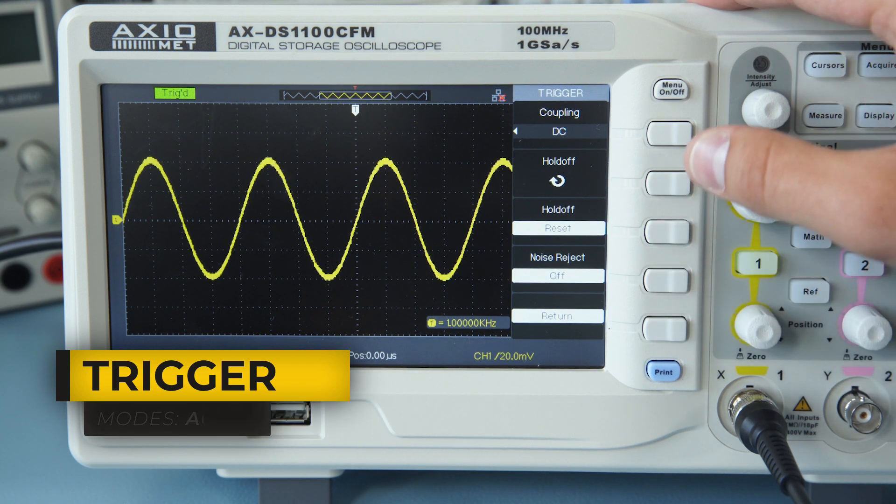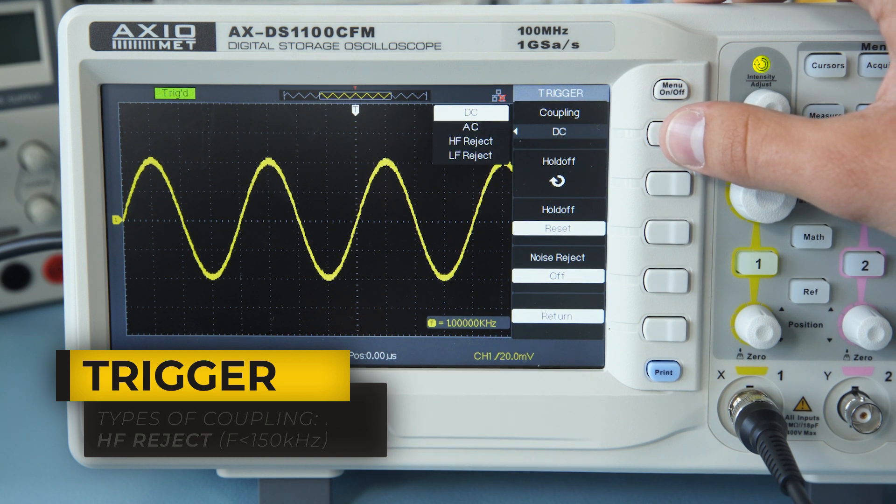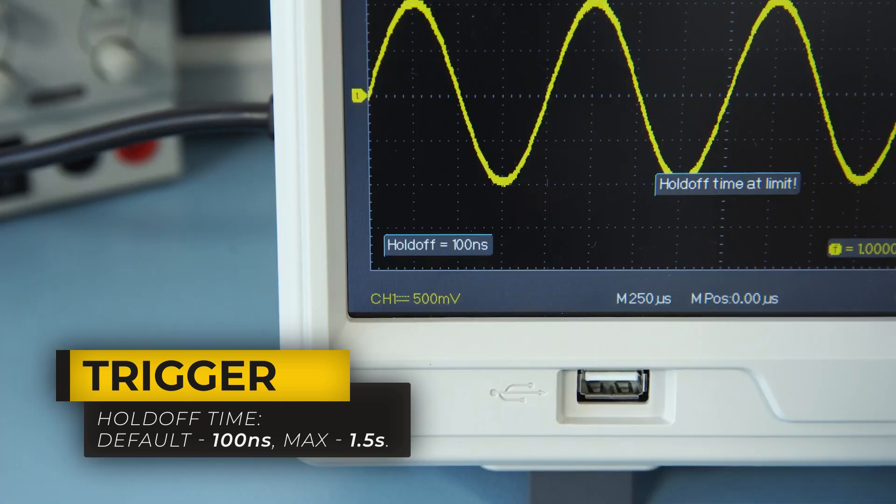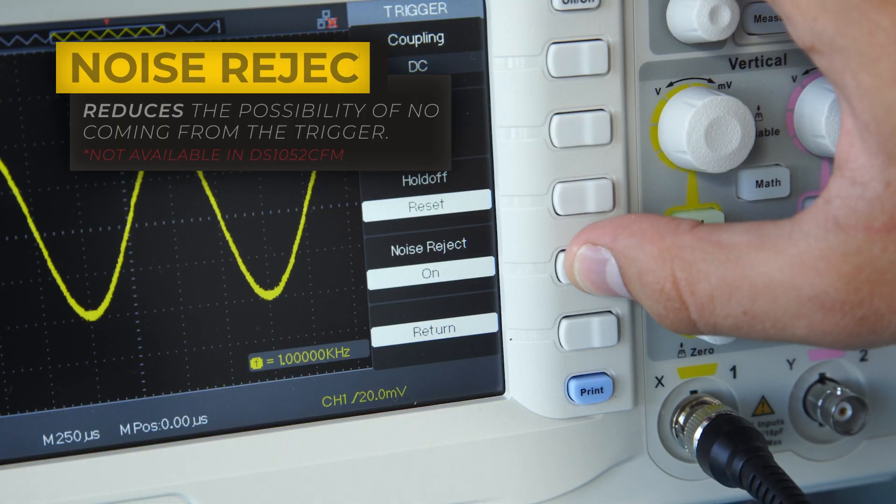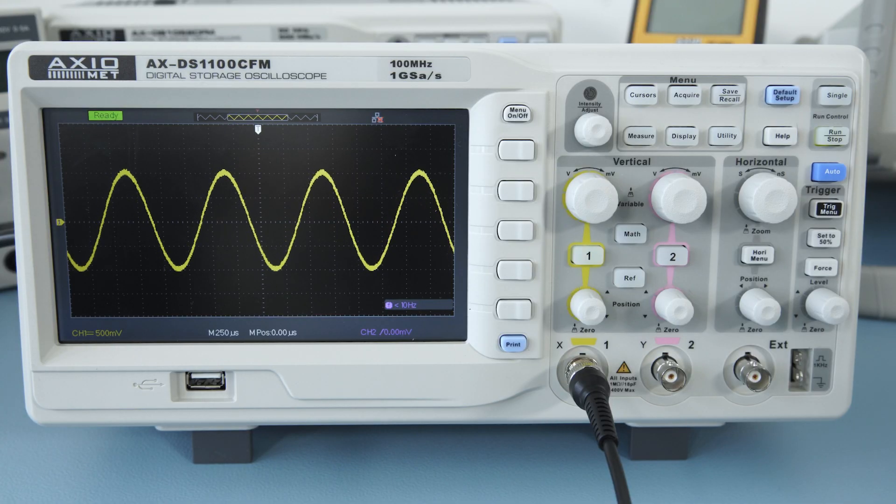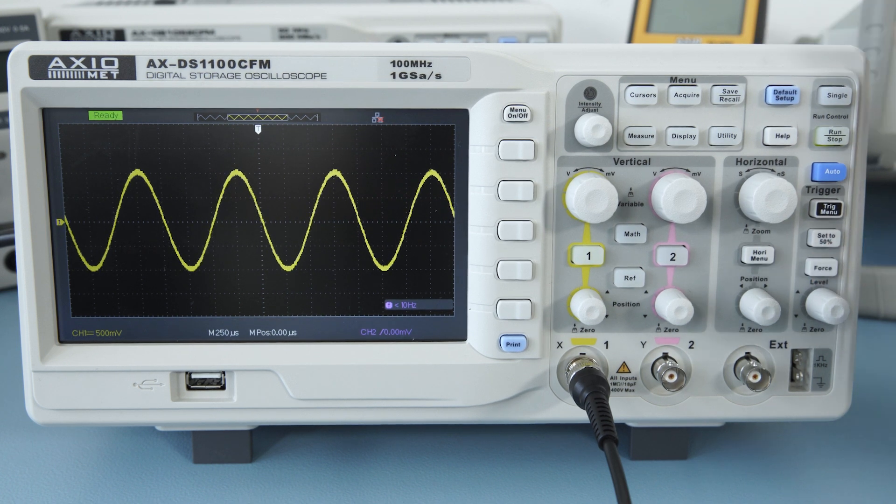In the trigger setup menu, you can define the type of coupling or change the holdoff time in case of complex waveforms. Turn on the Noise Reject function to reduce the possibility of noise coming from the trigger.